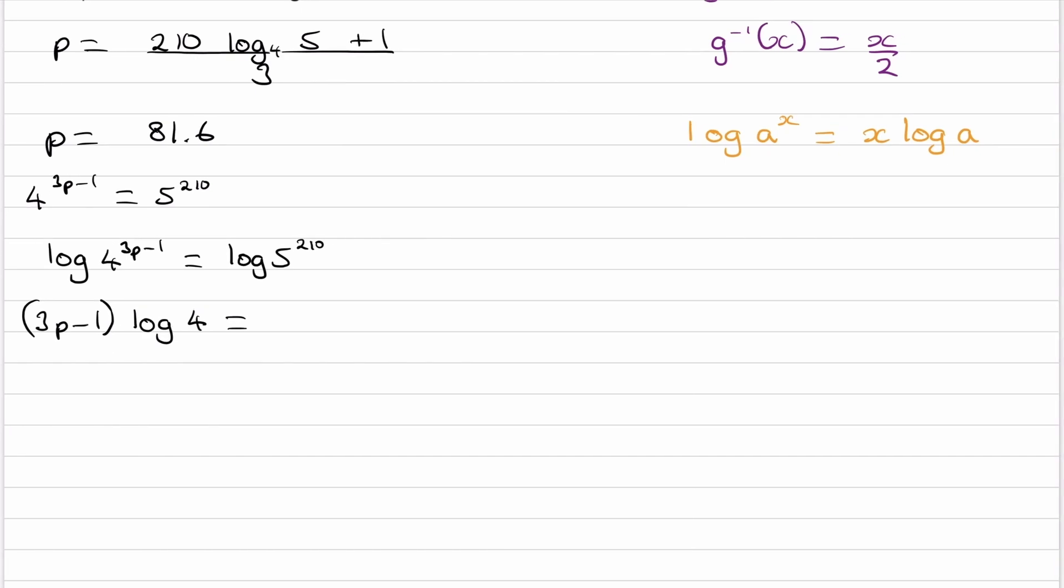All of that put in brackets is then multiplied by log of 4. And the right-hand side as well. We have to bring the 2.10 out for the reasons we mentioned earlier. We can't do 5 to the power of 2.10 in our calculator. So the right-hand side becomes 2.10 log of 5. So now you want to rearrange this for p. So then the first thing to do would be to divide both sides by log 4. So this then becomes 3p minus 1 is equal to 2.10 log 5 all over log 4. And now it's pretty straightforward. Add 1 to both sides.